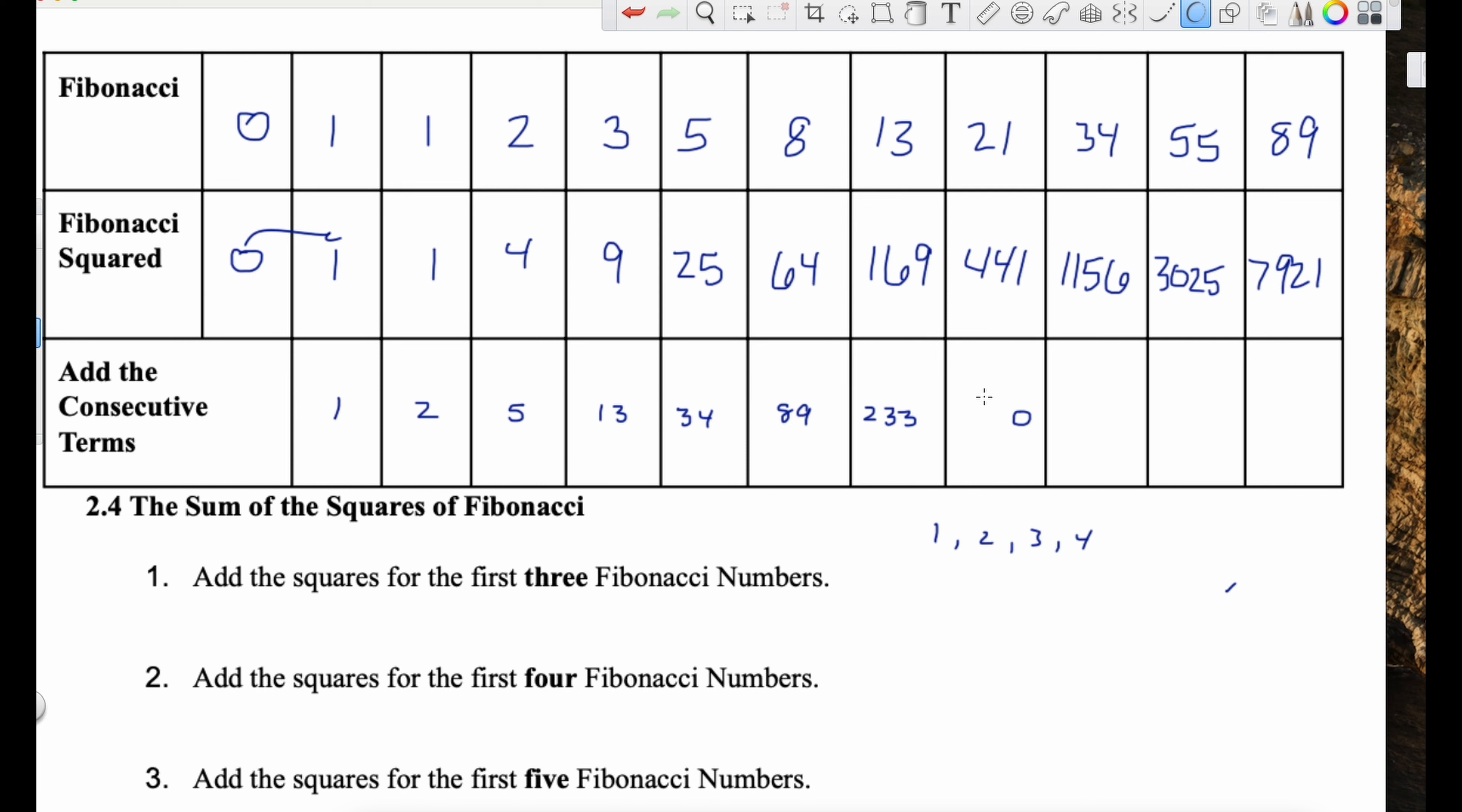And when we do that, we get 40 because 15 plus 25 is 40. And then let's do one more here. Zero plus one plus one plus four plus nine plus 25 plus 64. That's the next one. And that gets us, I think it's 104. I'm just going to double check. We got 40, yeah, 40 plus 64 is 104. There we go. Two, six, 15, 40, and 104.